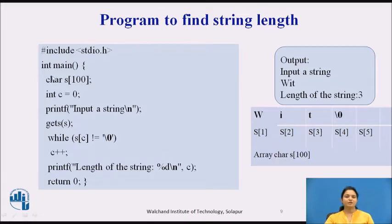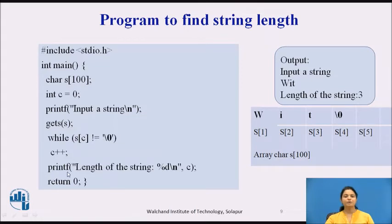In the first simple program, we store the string in 's' and set counter 'c' equal to 0. We input the string using gets. Our logic is: while s[c] is not equal to null, we scan and increment the counter. Once we get the null character, we exit the loop. We then print the length of the string 'c'. For input 'wit', the array stores w, i, t with a null character, giving length 3.